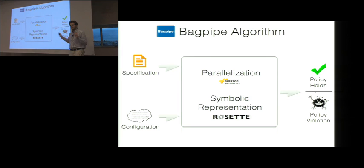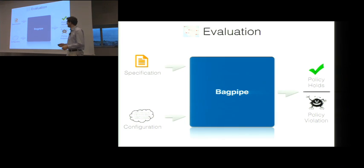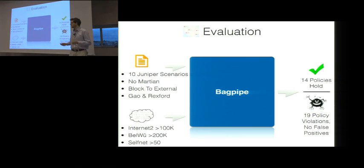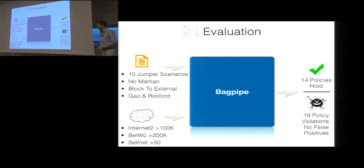There are more tricks described in the paper to make this work. We evaluated our tool on real configurations, expressing various specifications — 10 of which came from Juniper configuration scenarios — and evaluated them on real configurations with hundreds of thousands of lines of code. In the end, we found 14 policies that hold, verifying they are always true, and found 19 policy violations where the specification did not hold. We did not report any false positives.